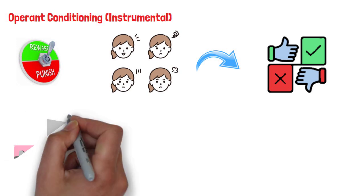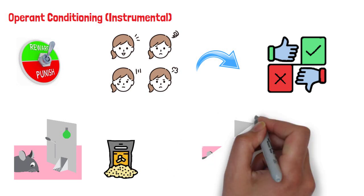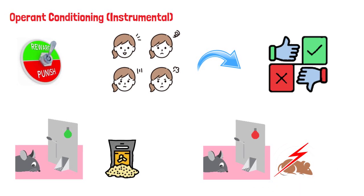For example, when lab rats press a lever when a green light is on, they receive a food pellet as a reward. And when they press the lever when a red light is on, they receive a mild electric shock. As a result, they learn to press the lever only when the green light is on and avoid the red light.